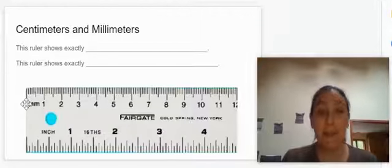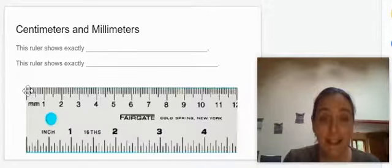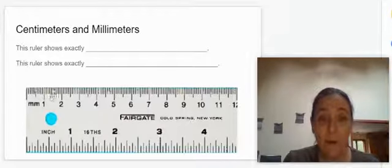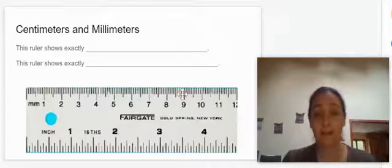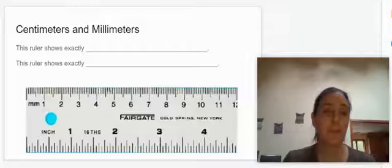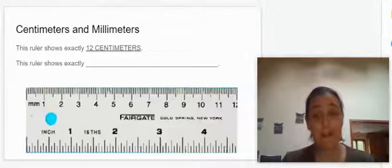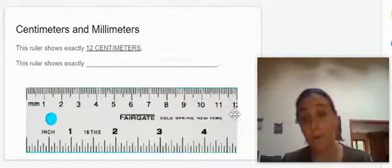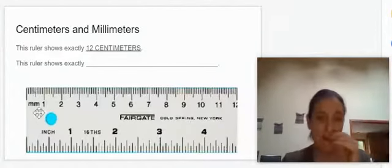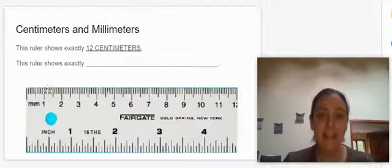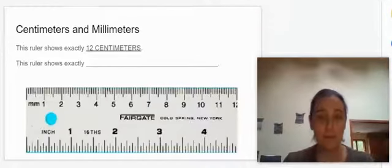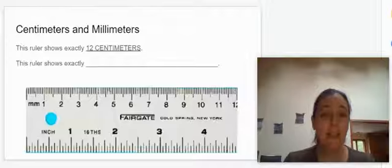So millimeters are actually those little teeny lines all the way across. So this ruler shows exactly 12 centimeters. That's centimeters. One, two, three, four, five, all the way up to 12 centimeters. This unit of 10 lines together is one centimeter. Those little teeny lines are millimeters.